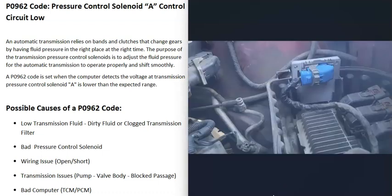The last possible cause is a bad computer — such as a bad transmission control module or powertrain control module. This isn't too common; usually a P0962 code is going to be caused by a problem with the solenoid itself or a wiring issue. But it does happen sometimes. If you do think you have a computer issue, make sure the battery is charged, the battery terminals are connected well, and there's no corrosion, because all these computers need a good stable power supply and good ground — otherwise they can act erratically.